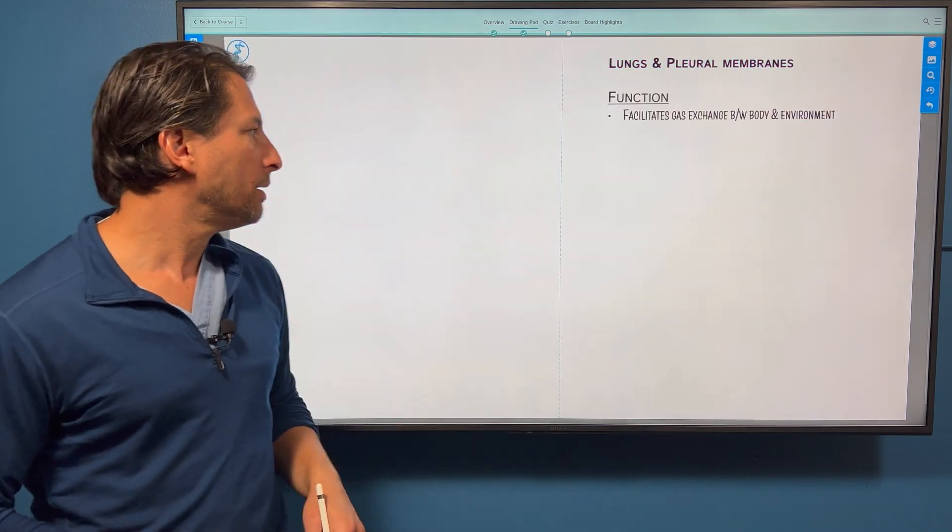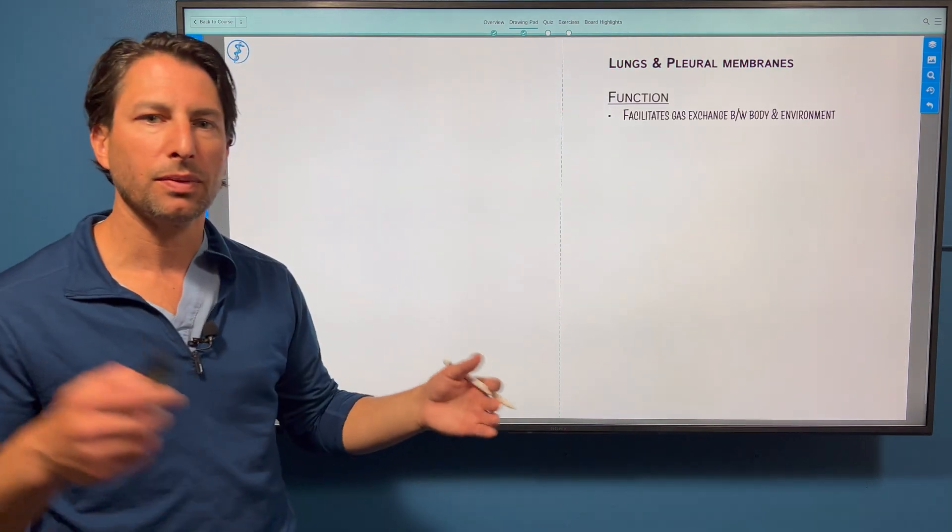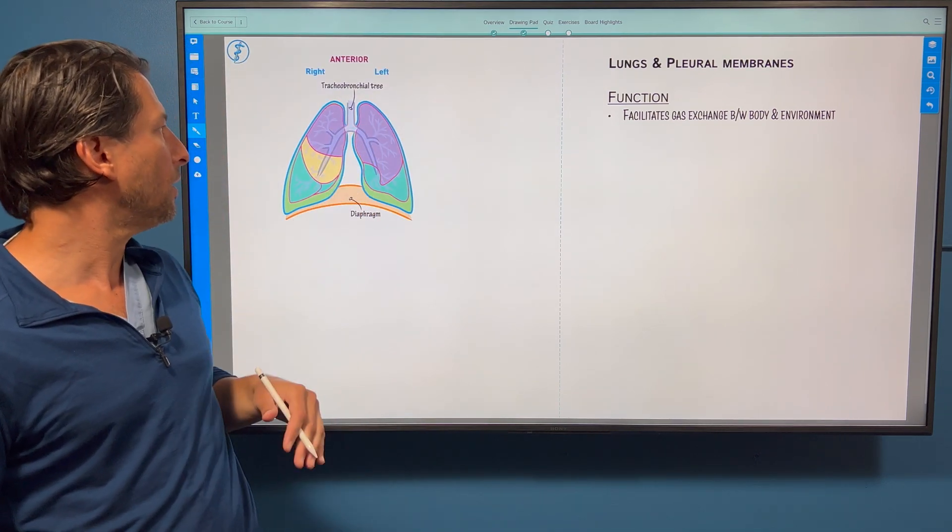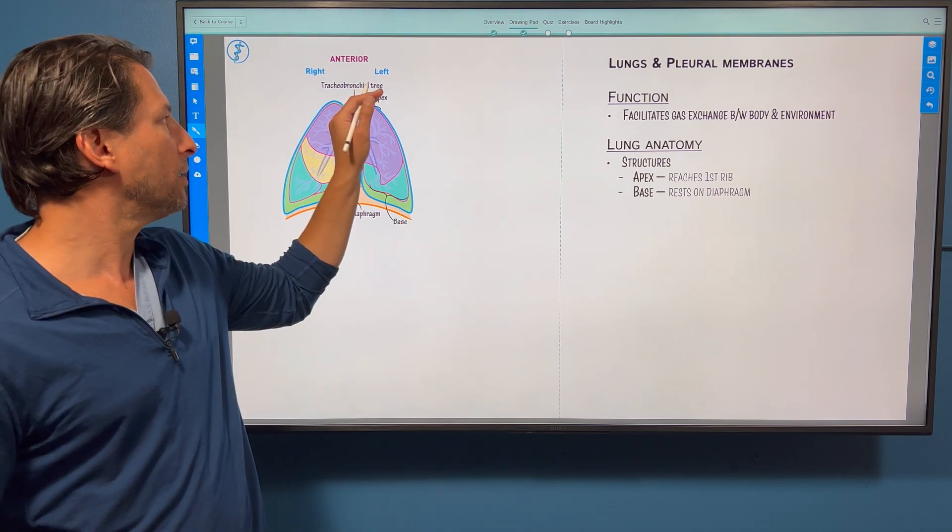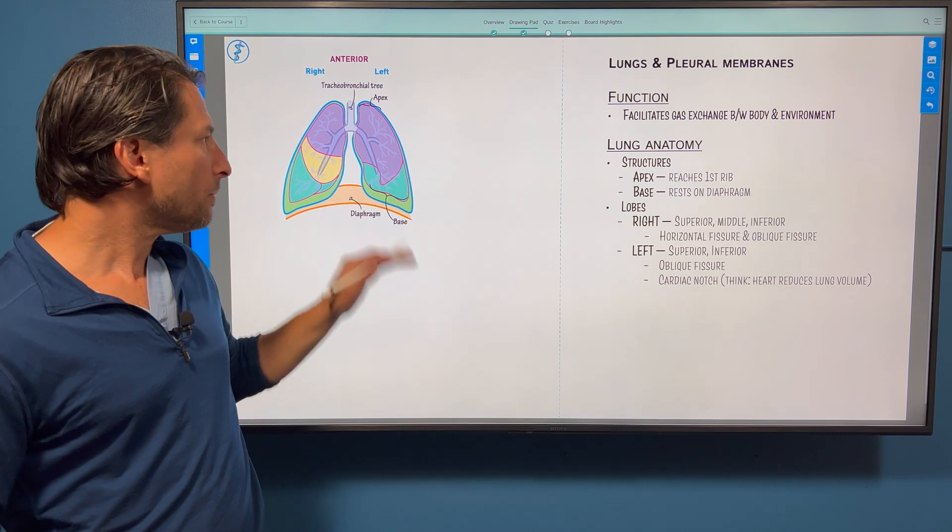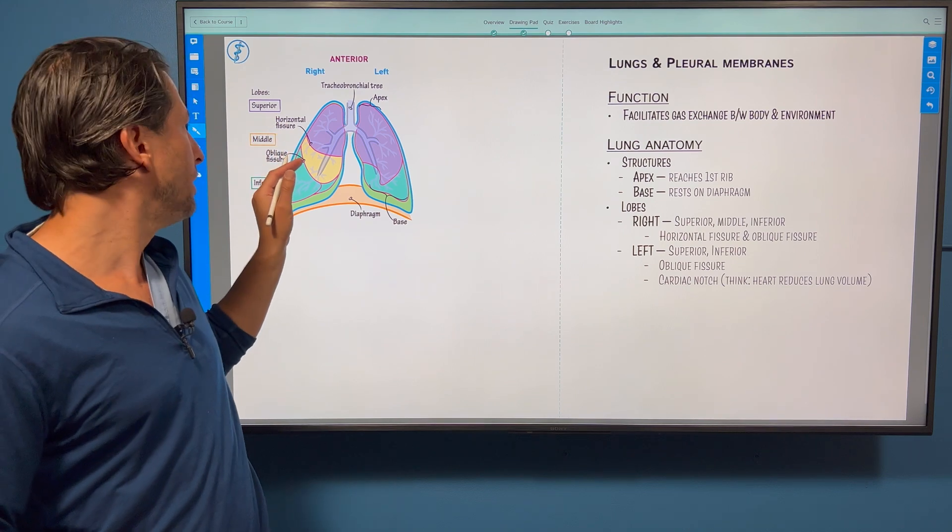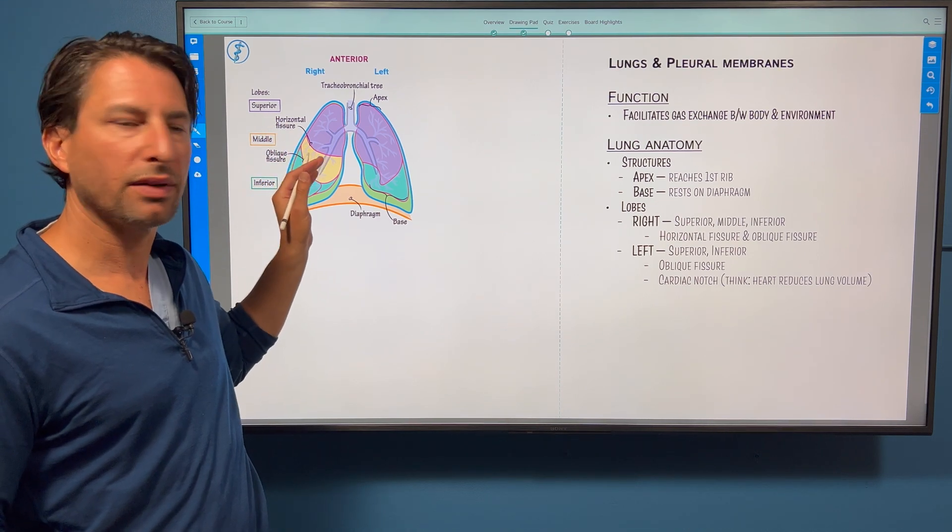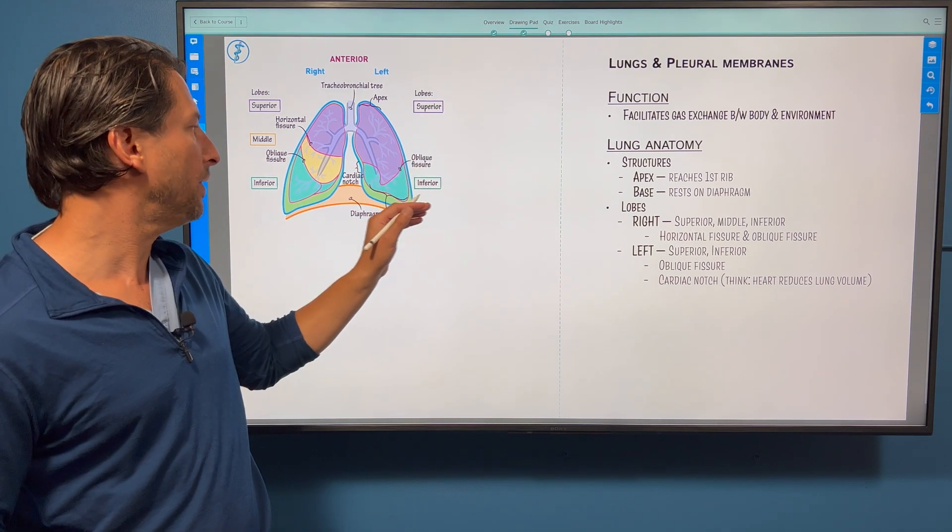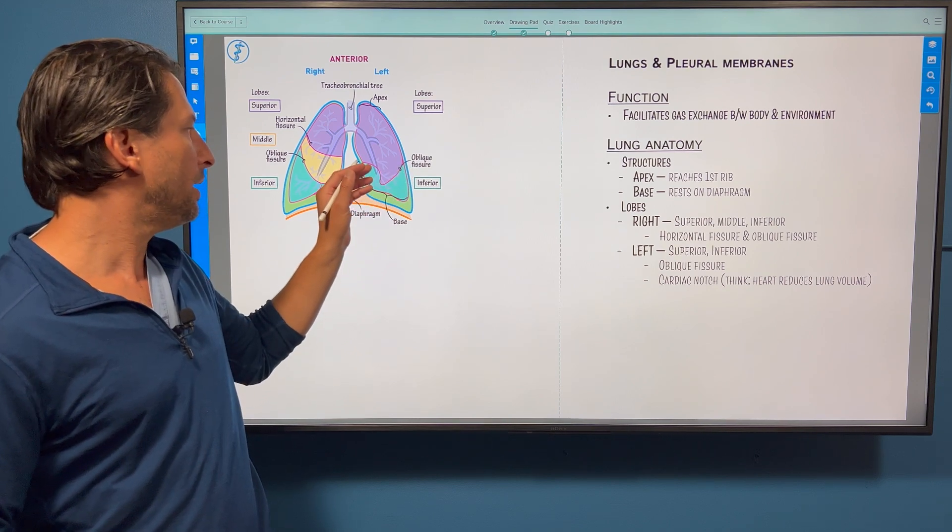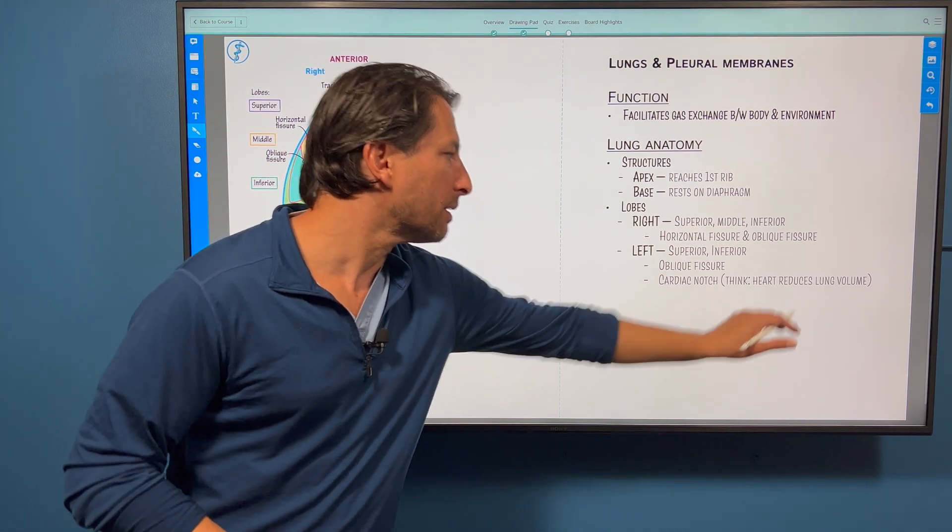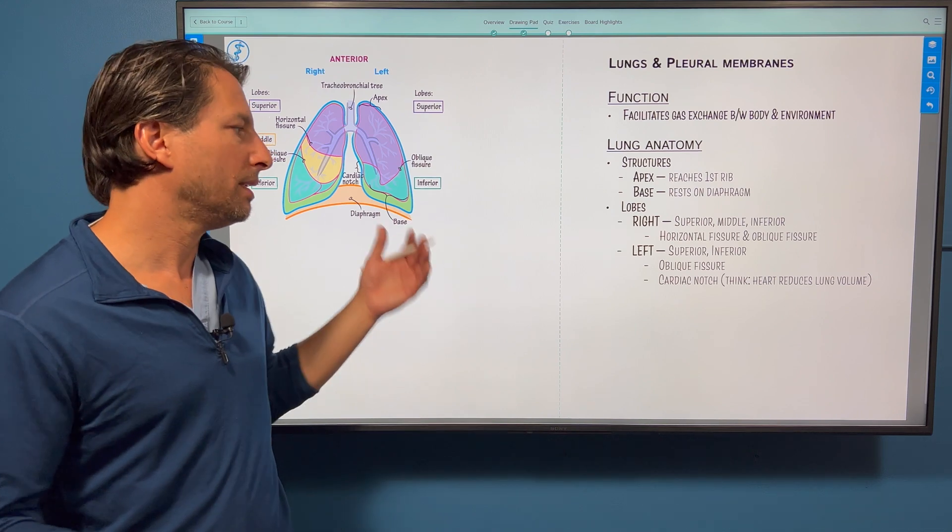The lungs and pleural membranes facilitate gas exchange between the body and the environment. The lungs reach the first rib at the apex and at the base they reach the diaphragm. On the right we have superior, middle, and inferior separated by this horizontal fissure and this oblique fissure. On the left we have superior and inferior separated by the oblique fissure. And then we have this cardiac notch. It's a helpful mnemonic to think the heart reduces lung volume so the left has two lobes instead of three.